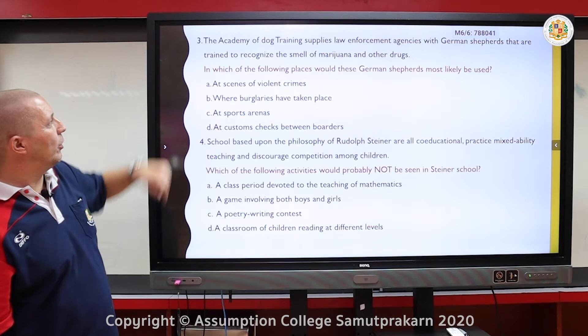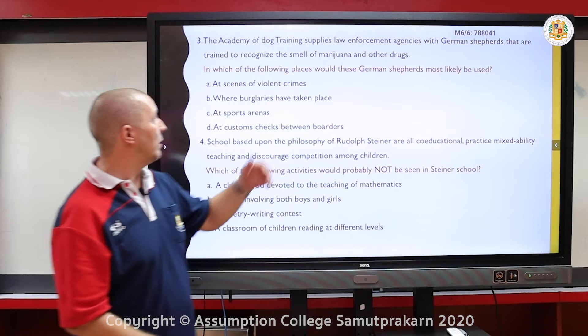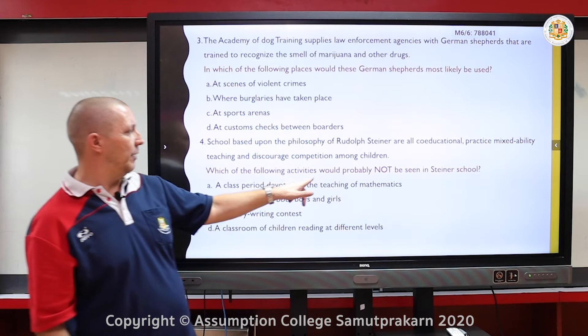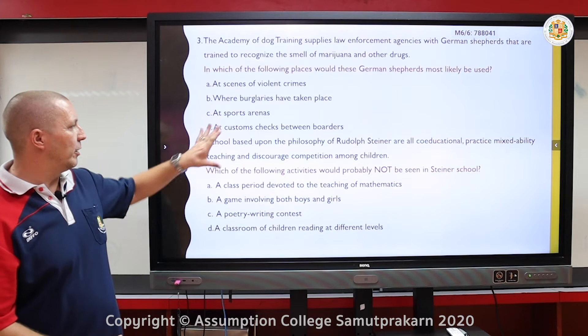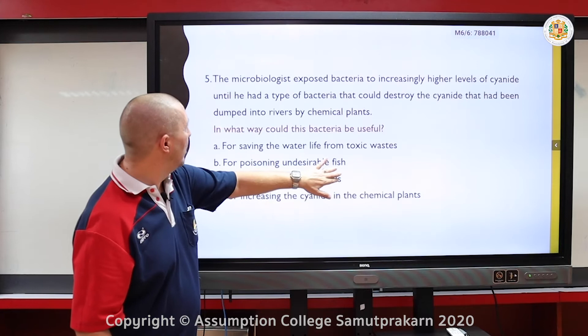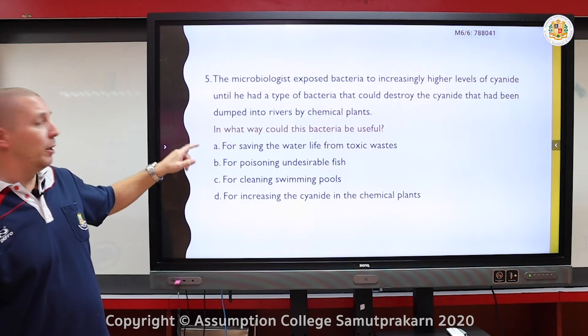Okay, it's three and four. Remember, in which of the following places would German Shepherds most likely be used? A German Shepherd is a breed of dog. And number four: which of the following activities would probably not be seen in a Steiner school? So which one would not be seen? Have a look at the text and choose an answer. Number five: in what way could this bacteria be useful? Choose an answer.